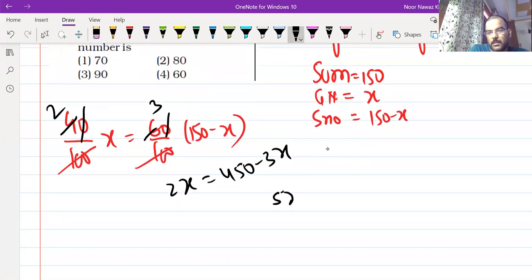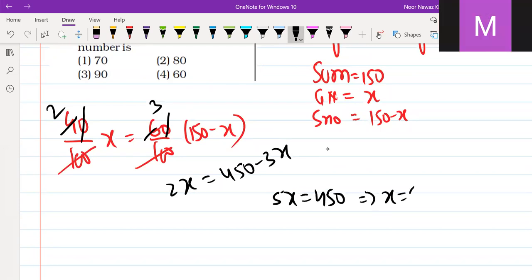So 3 plus 2 is 5x. How much is it? 90. x is equal to 90.